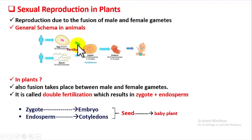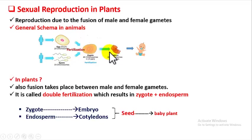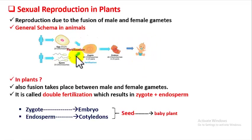In the general schema of sexual reproduction in animals, the female parent produces ovum and the male parent produces sperm. These two gametes fuse to form a structure called a zygote, and this fusion process is called fertilization. The zygote later undergoes repeated cell division to produce an embryo, which continues its development and finally produces a baby.